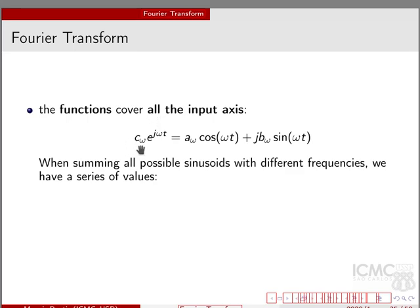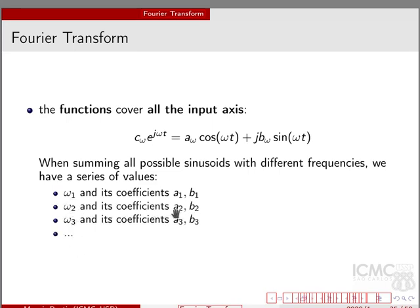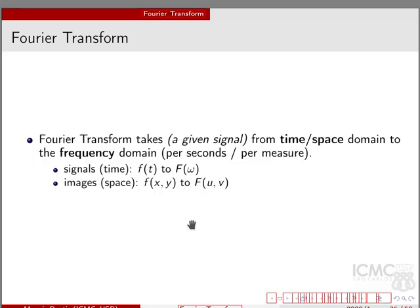We can write this as c(omega) times e to the power of j·omega·t using Euler's formula. After summing all possible sinusoids with different frequencies, we have a series of values: omega 1 with coefficients a1 and b1, omega 2 with a2 and b2, omega 3 with a3 and b3, and so on. The Fourier transform allows us to take a signal from the time domain — or the space domain in case of images — to the frequency domain.